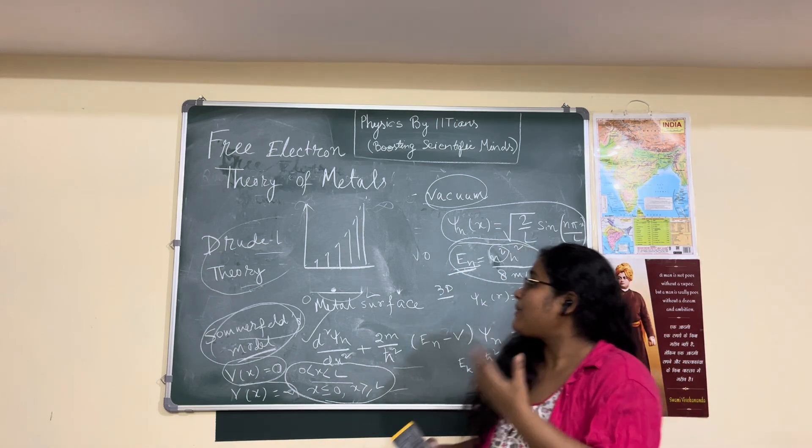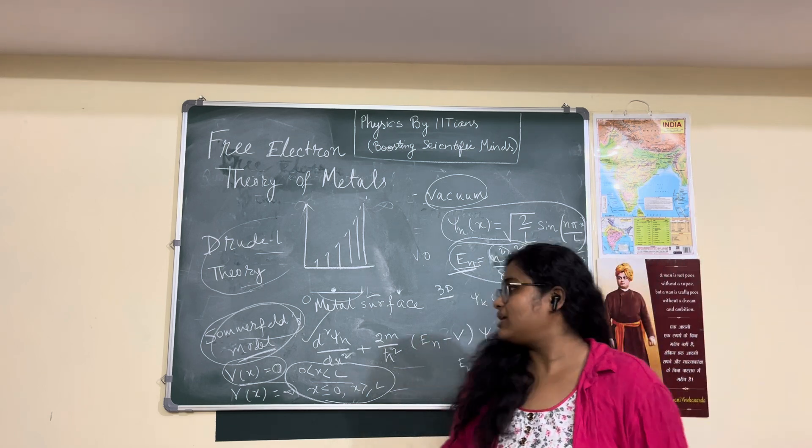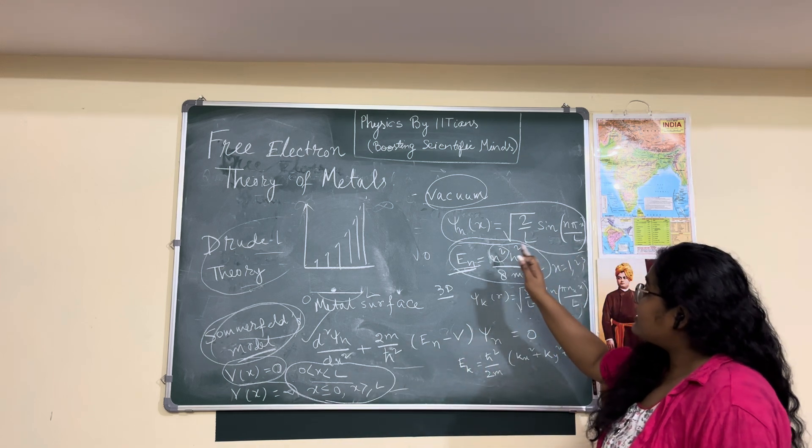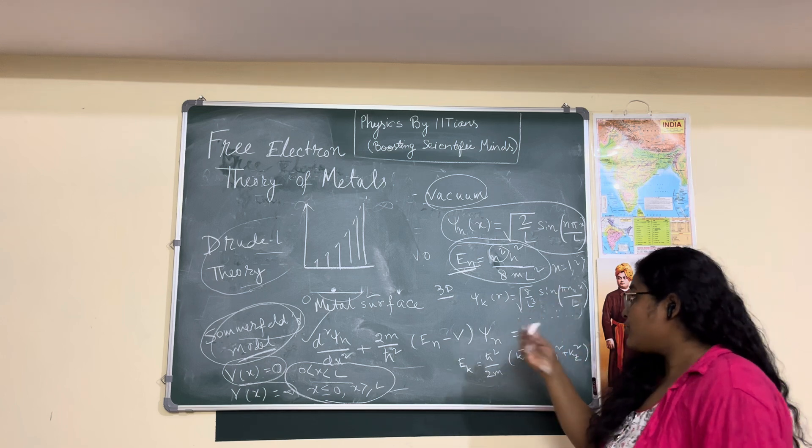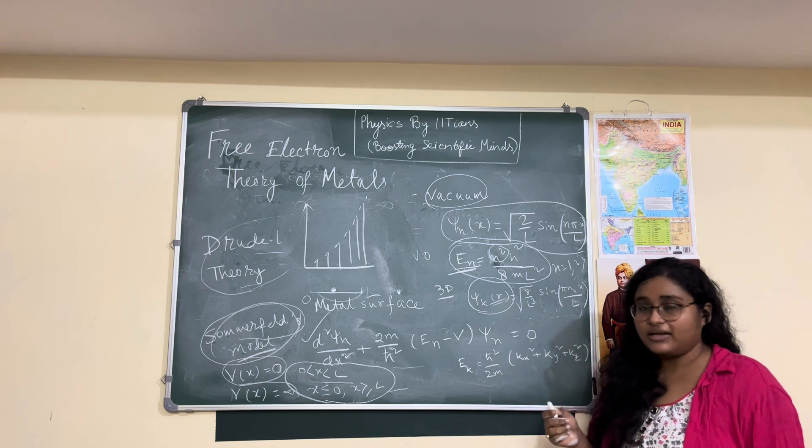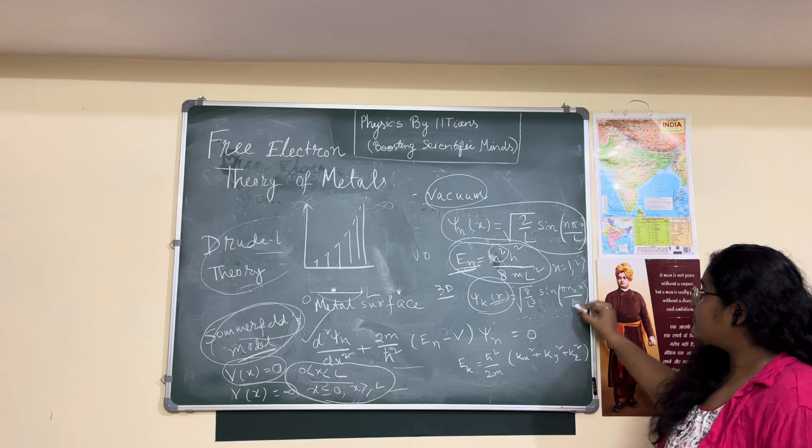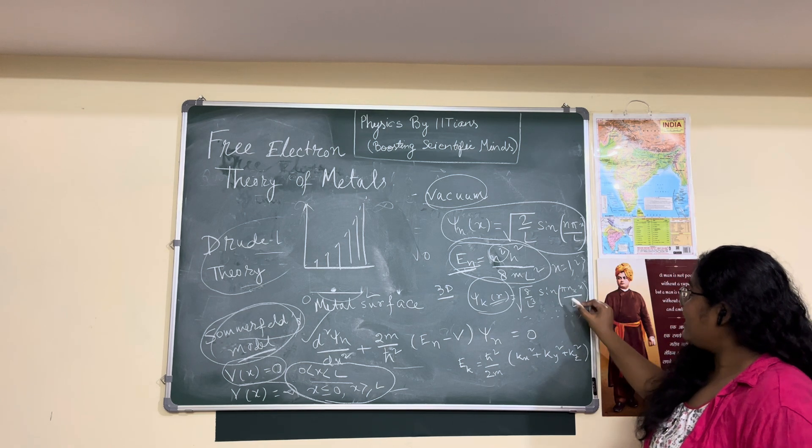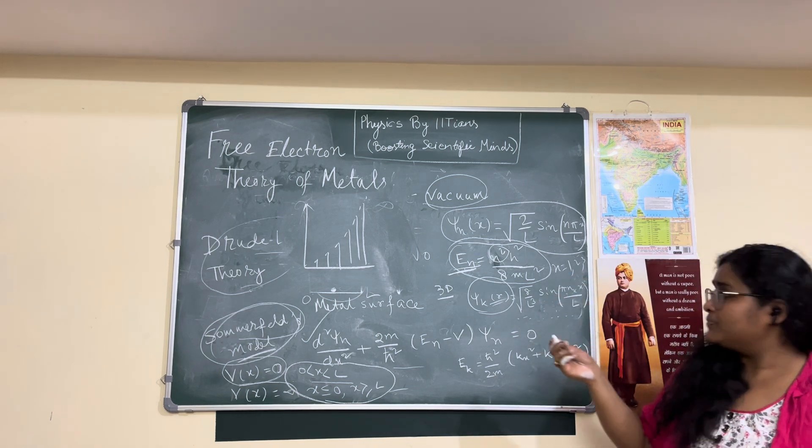Now for the next case, since we have a metal, it is a real case, so it is not one-dimensional. He approximated this as a three-dimensional potential box. He calculated the same thing with three-dimensional geometry. For that we get ψ(k) which is a function of R, not X, and it will be √(8/L³) sin(n_xπx/L) sin(n_yπy/L) sin(n_zπz/L).